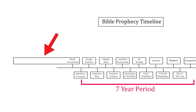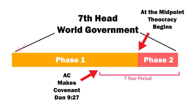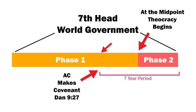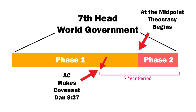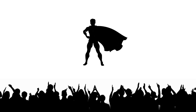What I hope to prove later in this presentation is that during the first phase of this world government — the final seventh head — none of the actual things the Bible warns us about the Antichrist will have happened yet. The more Christians at the time believe that the system itself is the Antichrist, even though he has not actually shown up yet, the more they will be prey for the actual Antichrist's savior deception when he does arrive.